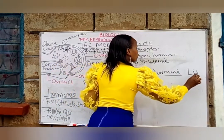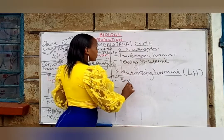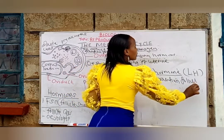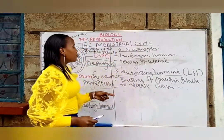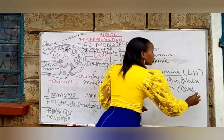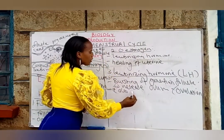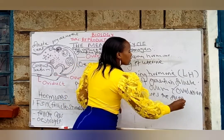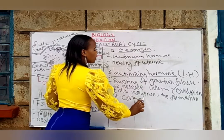Luteinizing hormone (LH) brings about ovulation — the bursting of the Graafian follicle to release the ovum. It is responsible for ovulation, and it also influences the formation of the corpus luteum.